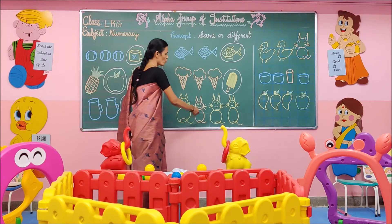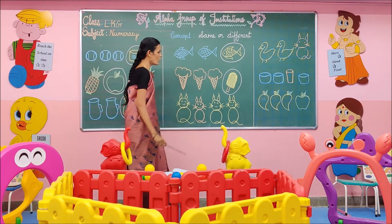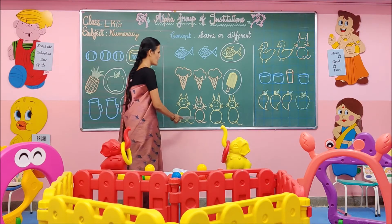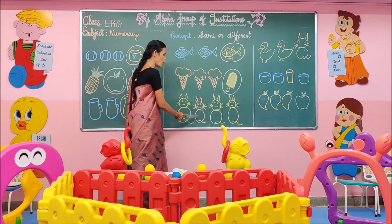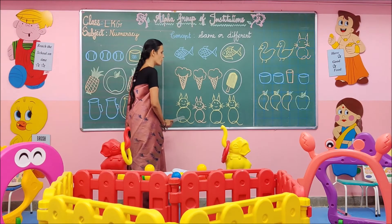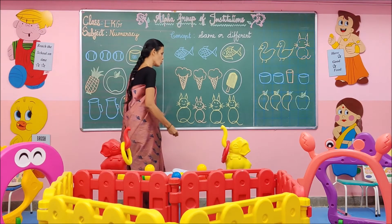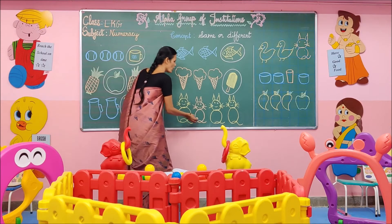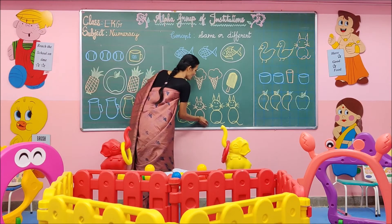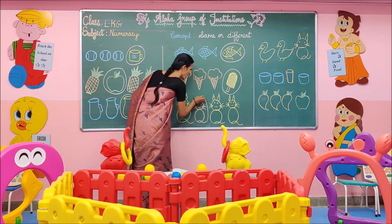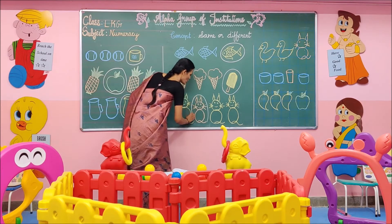In this group, which one is different? Brown cat is different from this group. So I am going to draw a circle around that brown cat.